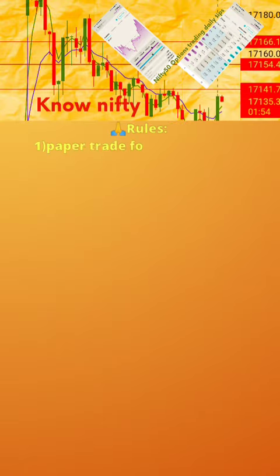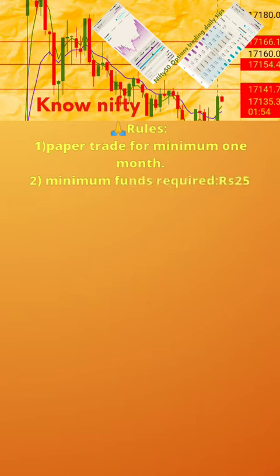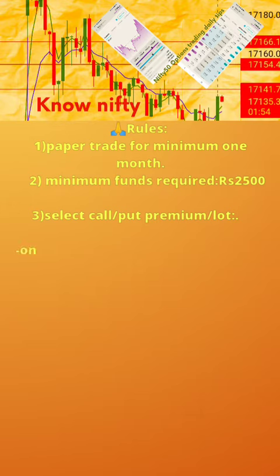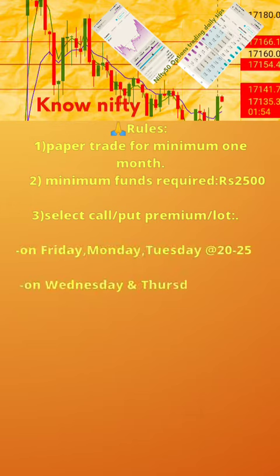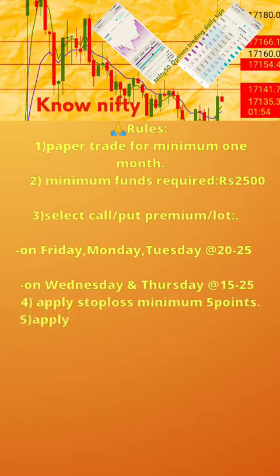Please follow the 7 rules below. 1. Paper trade for minimum 1 month. 2. Minimum funds required: 2500 rupees. 3. Select call or put premium per lot — on Friday, Monday, Tuesday at the rate 20–25; on Wednesday and Thursday at the rate 15–25. 4. Apply stop loss of minimum 5 points.